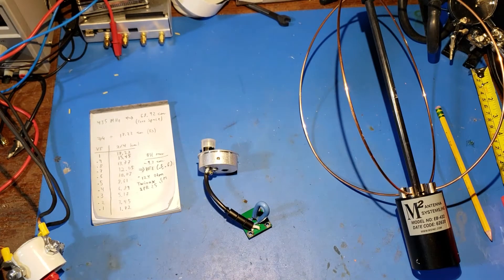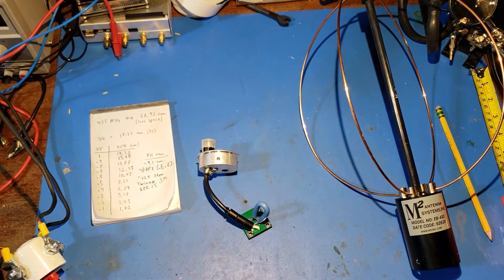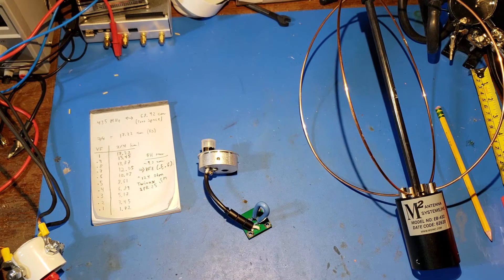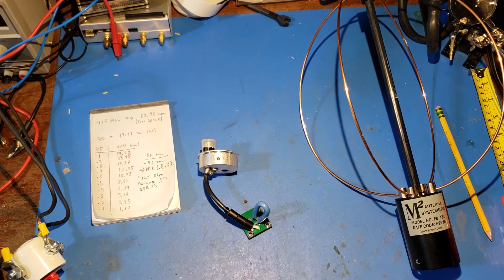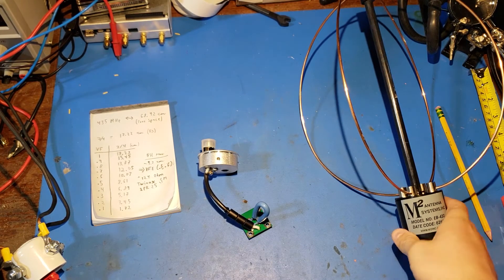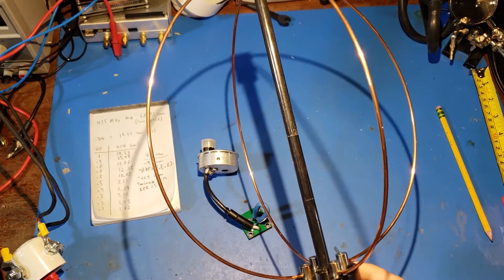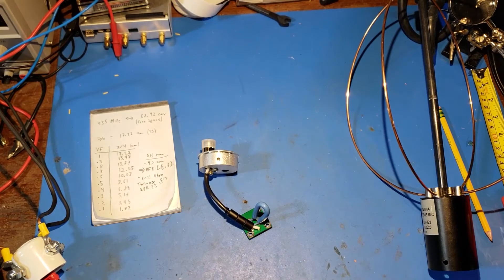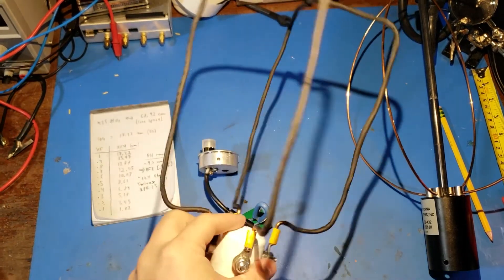Another interesting choice is that they chose 124 ohms as the characteristic impedance. Being a company like M2 Antenna Systems and being able to design exactly what you want as opposed to choosing cheap, off-the-shelf components, why would they pick 124 ohms?